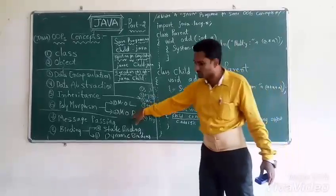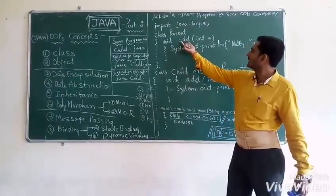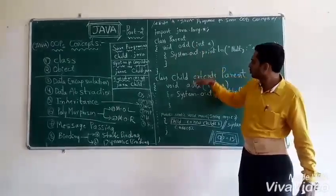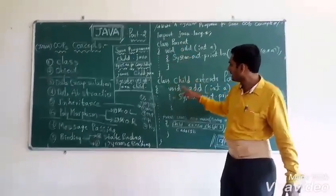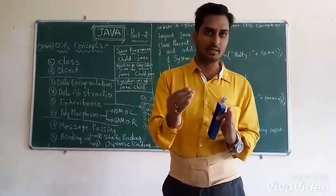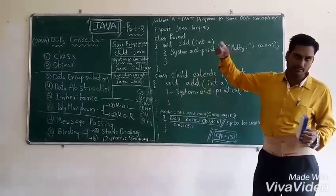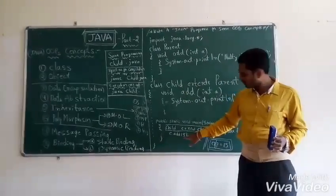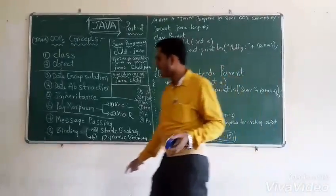For method overriding, class Parent has an add method, and class Child also has an add method with the same signature. Those are two overriding methods — method overriding done in different classes: class A, class Parent, and class Child. Next, Message Passing means passing some message. Technically, these round brackets are called parentheses; values inside are called parameters. The variable A is a parameter; the value 5 is an argument. This argument is passed to the parameter — that is called message passing.